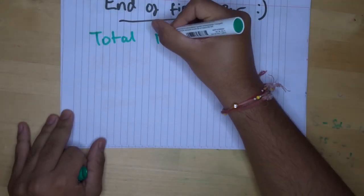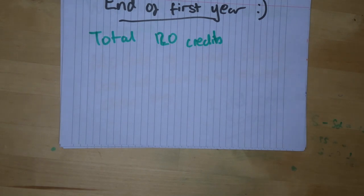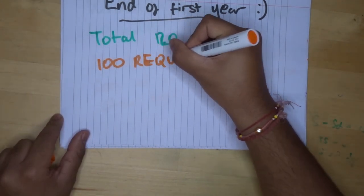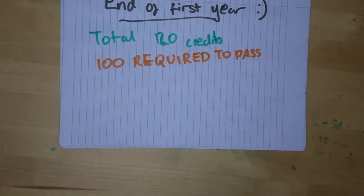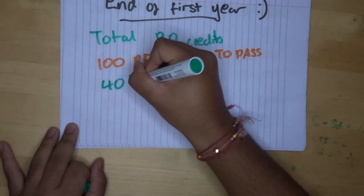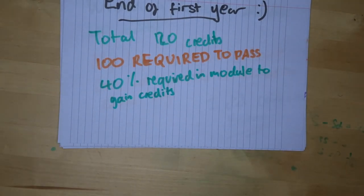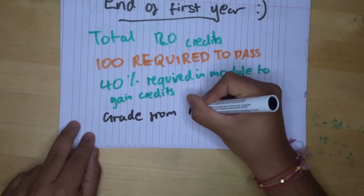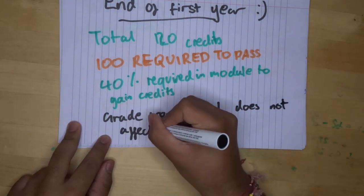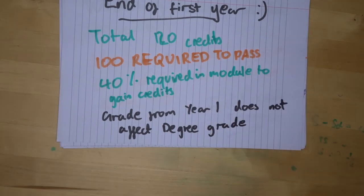The first year is made of a total of 120 credits. 100 of these credits are required to pass. You get all credits in a module if you get 40% or above. And the grade from the first year does not count to the degree grade. However, you are required to pass if you want to go into the second year.